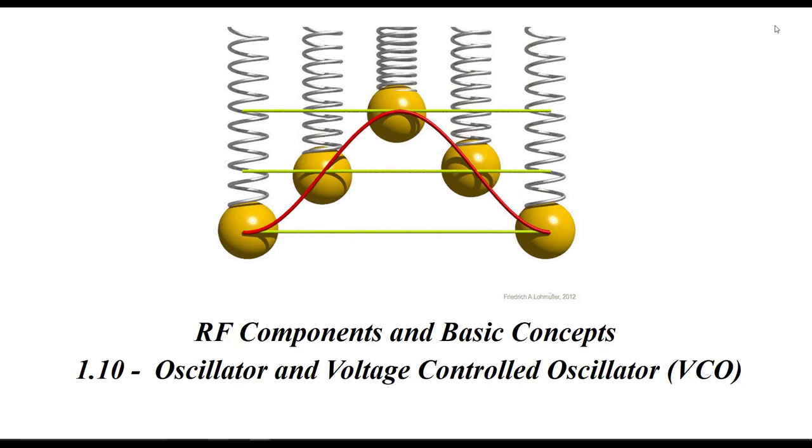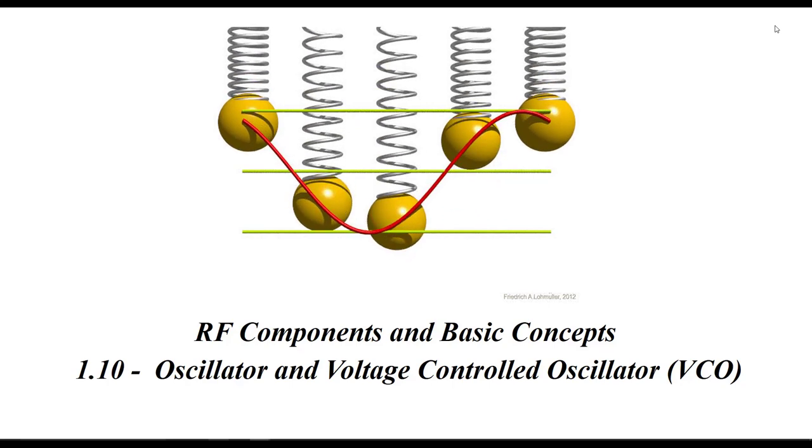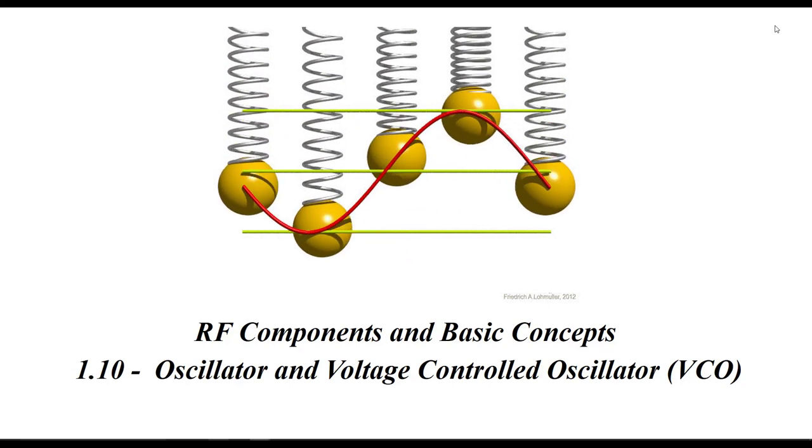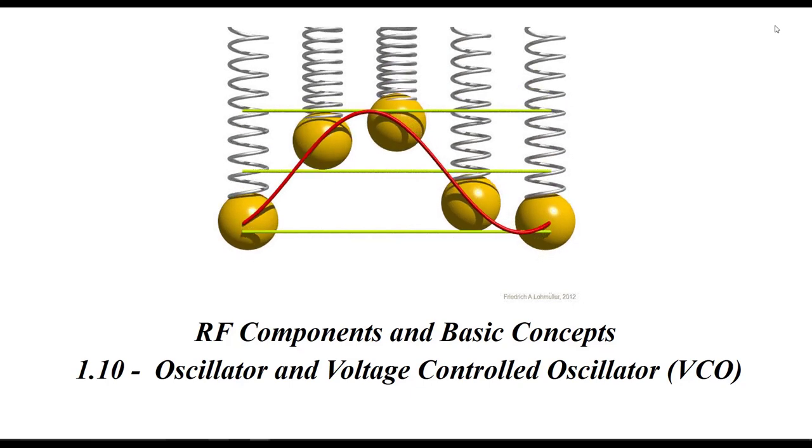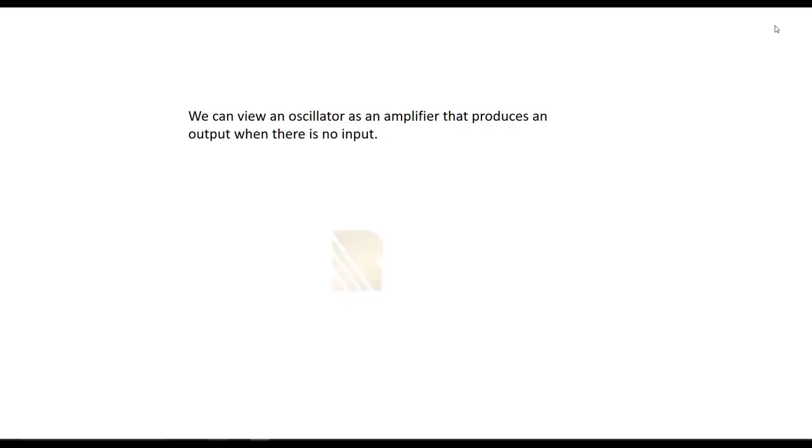In this part we are going to talk about oscillators and we will focus on radiofrequency oscillators. We will discuss voltage controlled oscillators which is called VCO. So what is an oscillator? It's an electronic circuit that produces a periodic oscillating electronic signal, often a sine wave or a square wave. Oscillators convert direct current DC from a power supply to an alternating current AC signal. They are widely used in many electronic devices. Like every other electronic block, oscillators need a DC power in order to produce the AC signal.